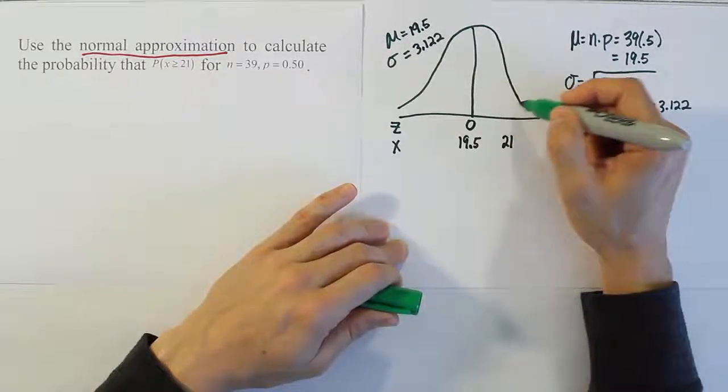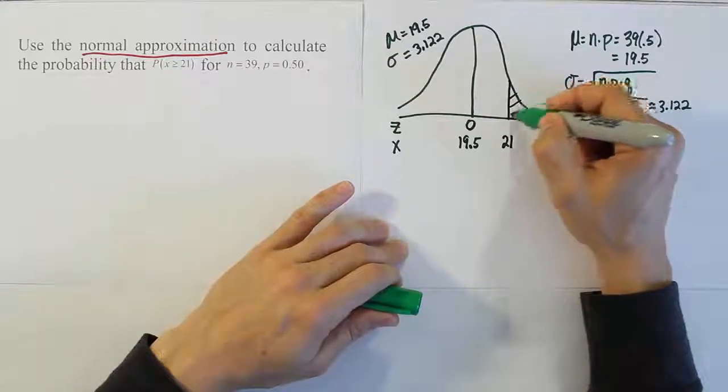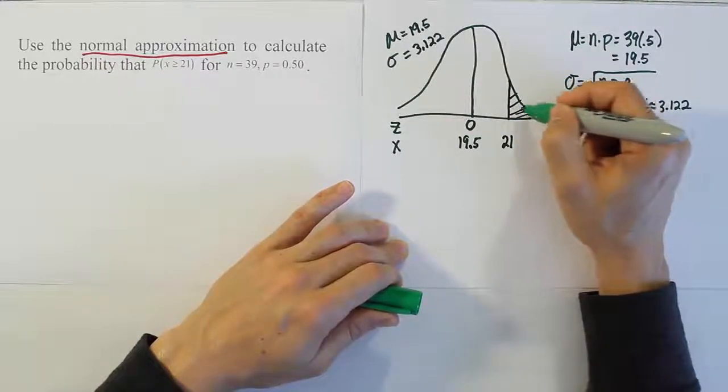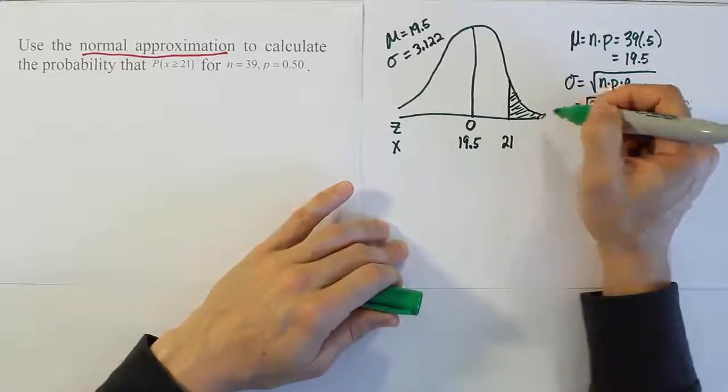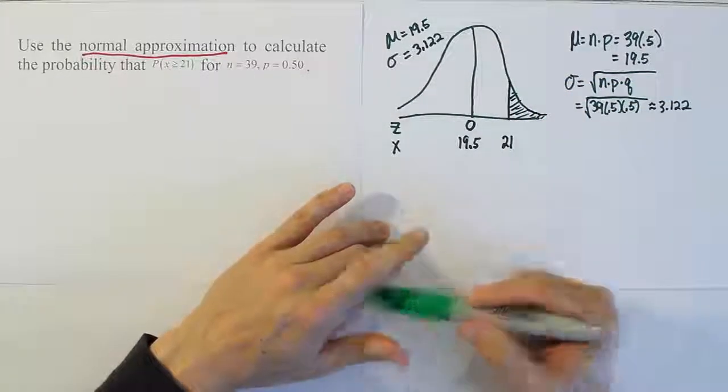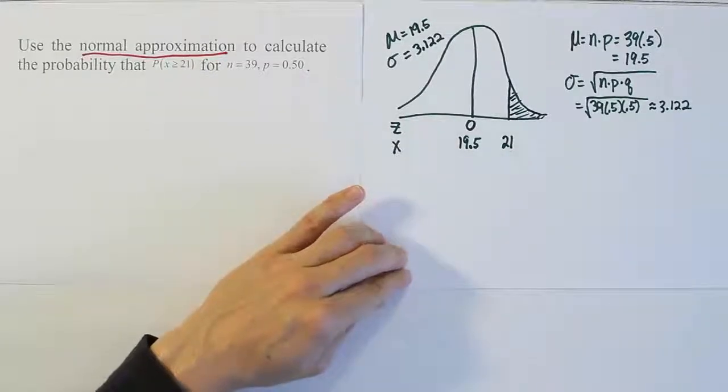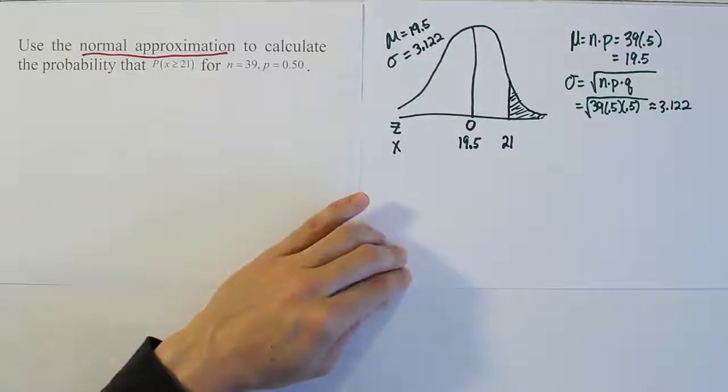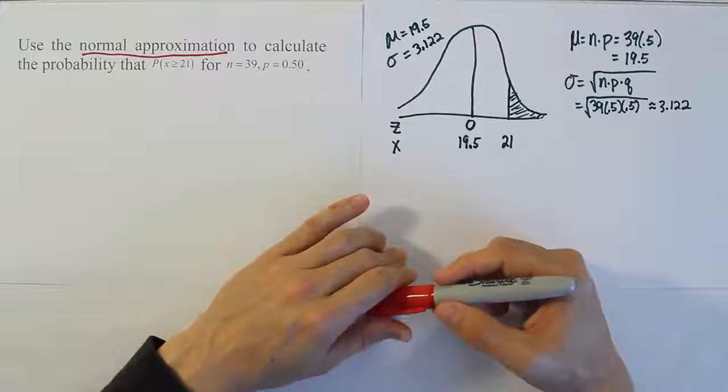If I said greater than 21 or equal to 21, I would have a line here at 21 and you'd be thinking I would find the area in the tail. But that's assuming that we're doing the problem with the straight z curve. We're forgetting about the continuity correction that needs to be done to make it fit for the binomial curve. So to improve the approximation, we're going to use something called continuity correction.